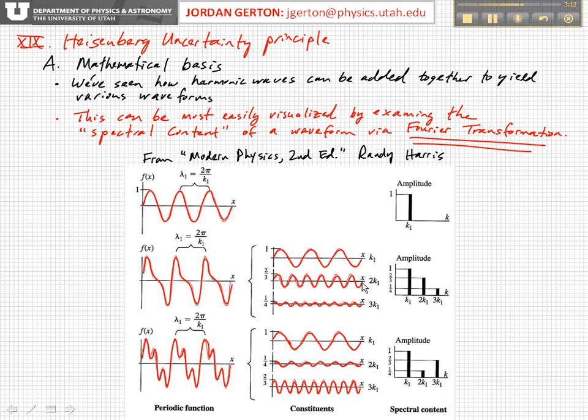And then we add to that a wave with a different wavelength, which is half the previous wavelength. So the wave number, which is 2π over lambda, is twice k1, so now we have this waveform. And let's imagine that it has an amplitude of two-thirds compared to the wave with wavelength lambda 1.